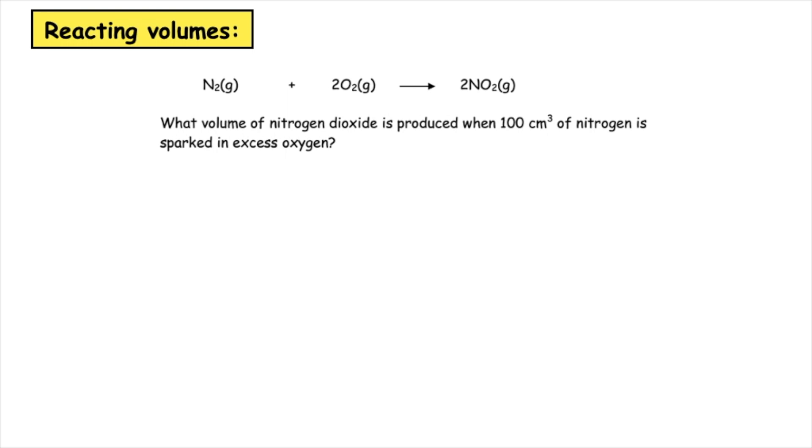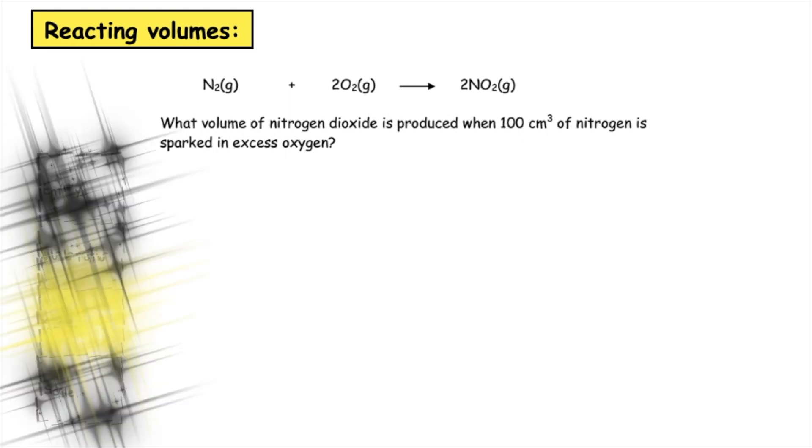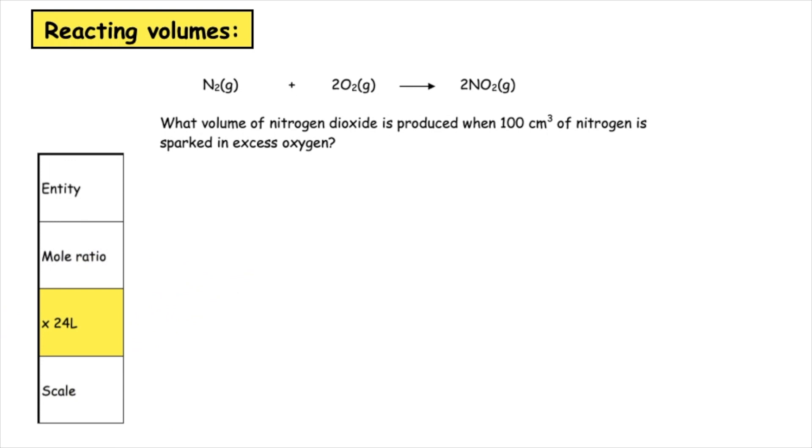You will always be given a balanced equation and the first thing you want to do is pick out your reactant gas which you have numerical data for and scale that for your product. Step one is we want to pick out the entities. We have been given nitrogen which has the formula N2 and we want to scale for our product which is nitrogen dioxide NO2.